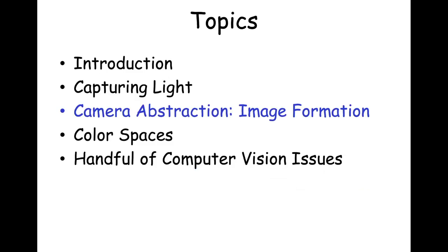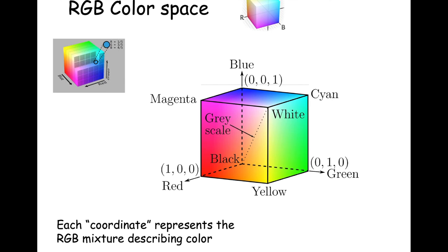Now that we've seen how light makes its way to the sensing device, let's look at the representation the sensor gives us — the color space. The RGB color space is represented as a color cube with a red axis, a green axis, and a blue axis. Each coordinate axis describes the saturation of each principal color, and each position in the cube represents a color from mixing red, green, and blue.